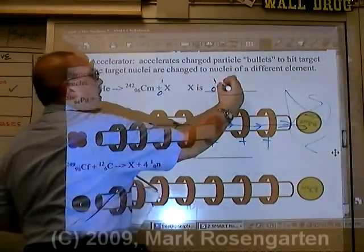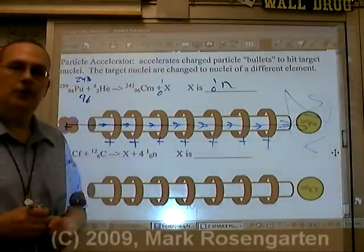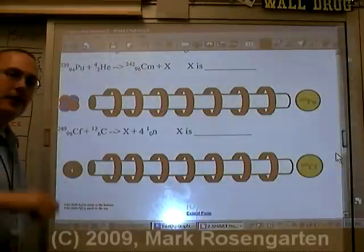What's got a mass of 1 and a charge of 0? A neutron. So a neutron is given off when curium is formed from this artificial transmutation.